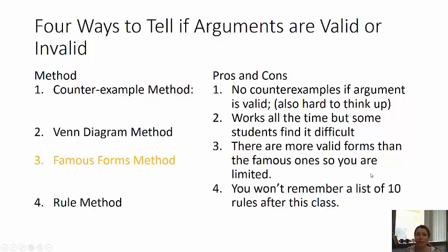Four ways to tell if an argument is valid or invalid. The first one is the counter example method.